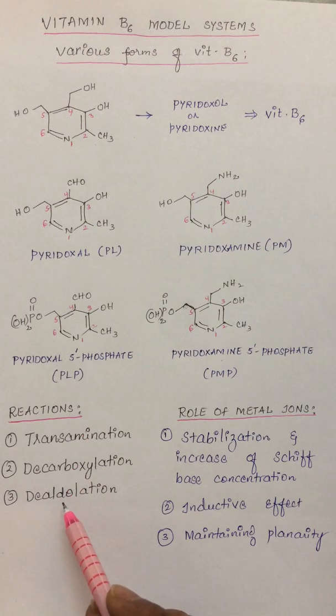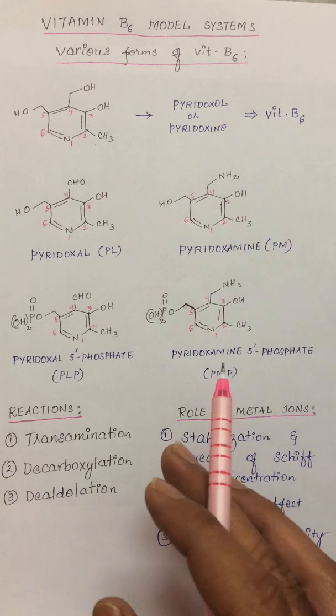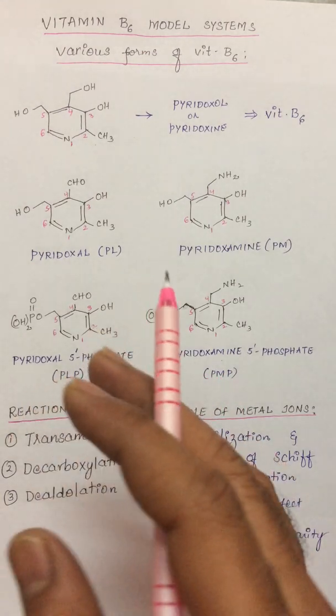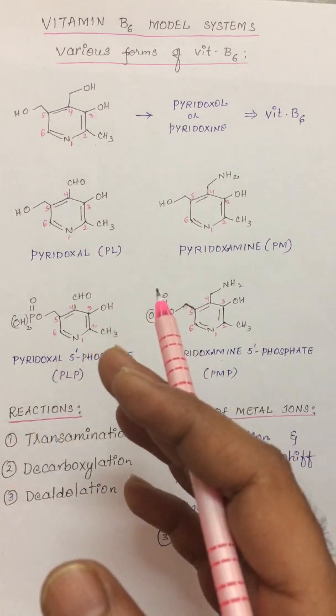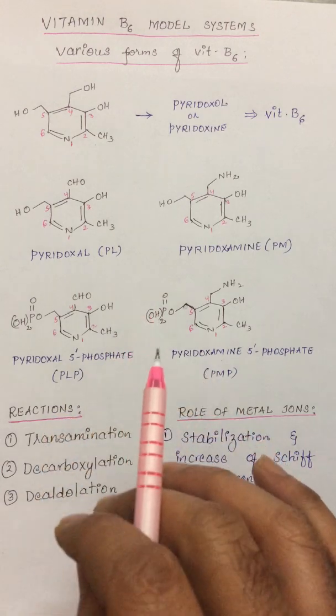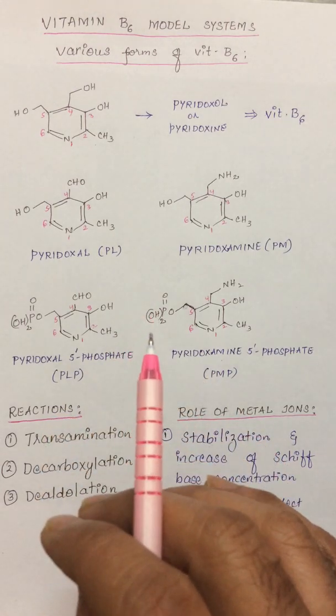These are the three important reactions. Now in these reactions, in the model studies containing pyridoxal and metal ion, amino acids are found to undergo almost all reactions to a greater or lesser extent.